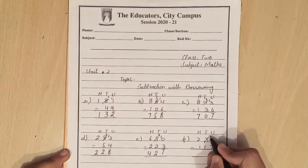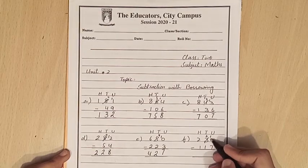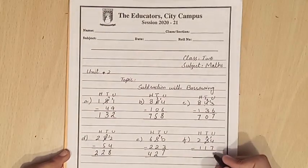We borrow from 3. Now we have 14. 14 minus 7 is 7. Now 2 minus 1 is 1.